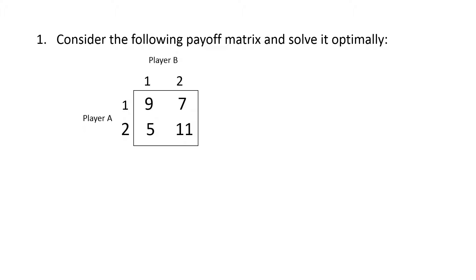Here is a question for you. Consider the following payoff matrix and solve it optimally. You are having two players, player A and player B. Strategies of player A are 1 and 2, and strategies of player B are also 1 and 2. The outcomes are 9, 7, 5, and 11 for each combination.